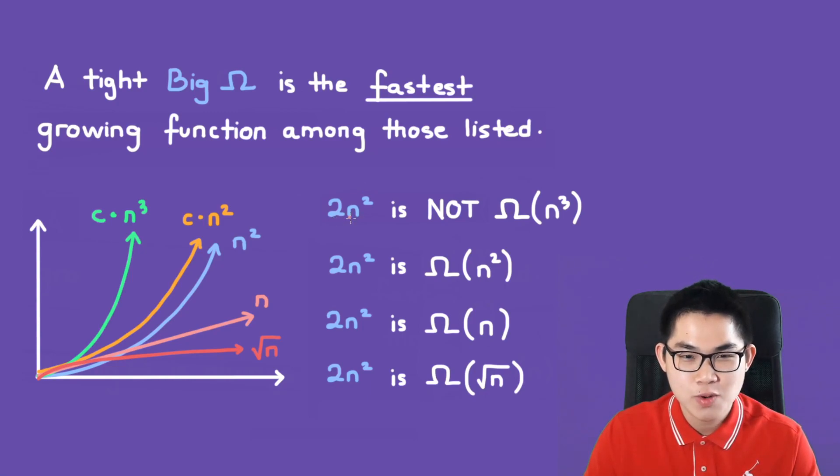We have 2n² is not big omega of n³, 2n² is big omega of n², 2n² is big omega of n, and 2n² is big omega of the square root of n. So all of these statements are correct statements. They're true. But which one is tight big omega?